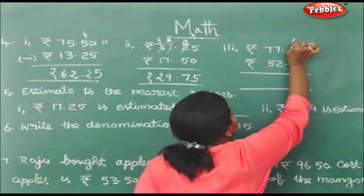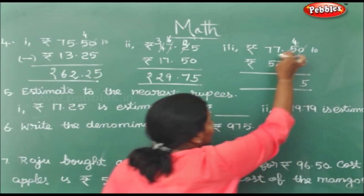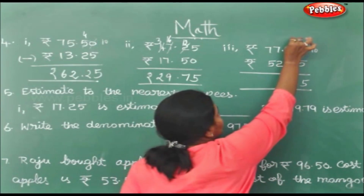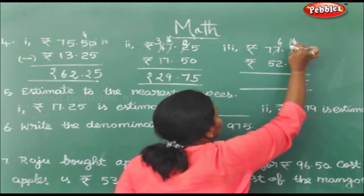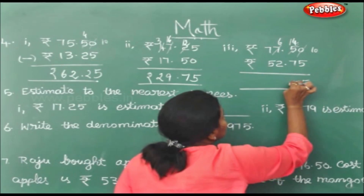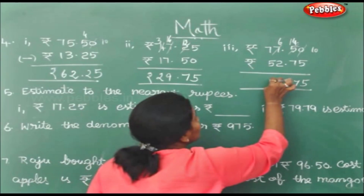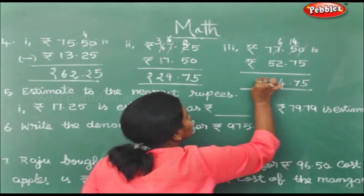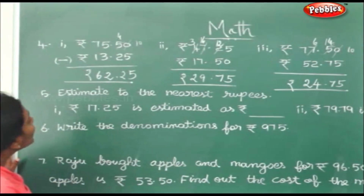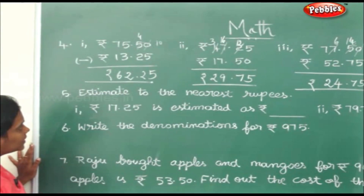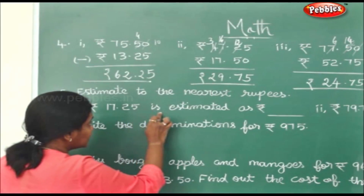Here, you cannot take away 0 from 5, so this becomes 10 and this becomes 4. 10 minus 5 is 5. 14 minus 7 is 7. 6 minus 2 is 4. 7 minus 5 is 2. So this is rupees 24 and 75 paise.